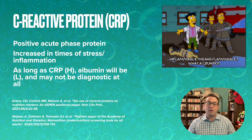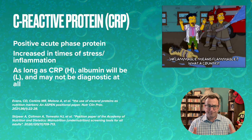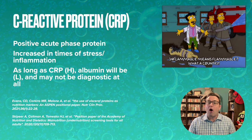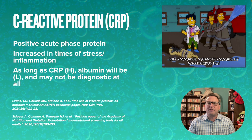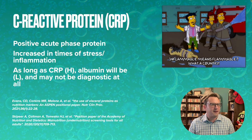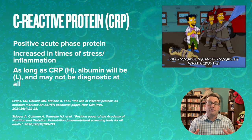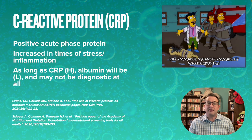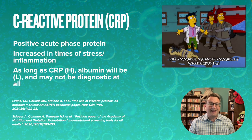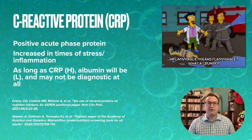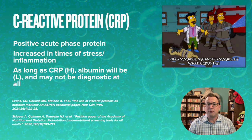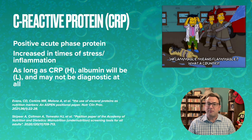Going back to the malnutrition diagnostic tool — the actual question AND and ASPEN ask is: are they inflamed? Specifically, they're looking at CRP. CRP is a positive acute phase protein — it increases in times of stress or inflammation. As long as CRP is high, albumin will be low, and there is nothing you or anyone else can do to change that. As long as a person is inflamed, their albumin will be low, and it may not be diagnostic at all.